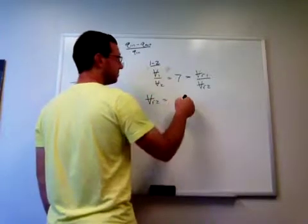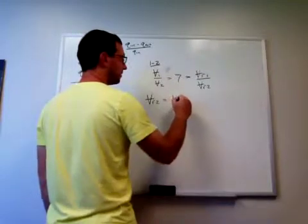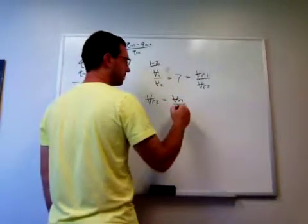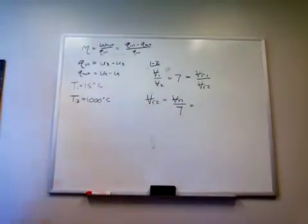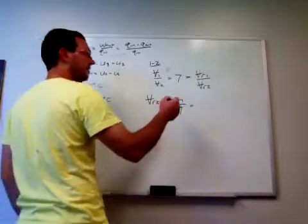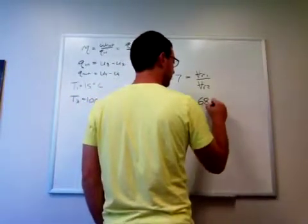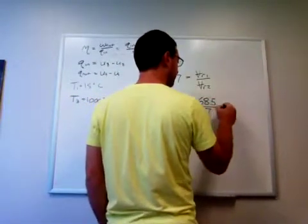It's Vr1 over 7. And so we can go look up Vr1. Since we know T1 is 15 degrees, 288. So at 288 the value of Vr is about 685, something like that.